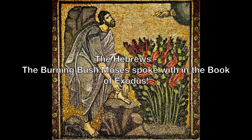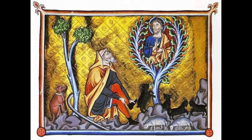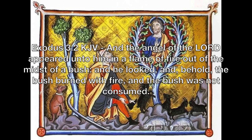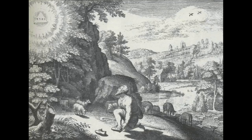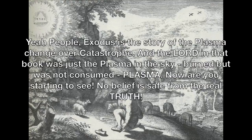The Hebrews: the burning bush Moses spoke with in the book of Exodus. Exodus 3:2, King James Version: 'And the angel of the Lord appeared unto him in a flame of fire out of the midst of a bush. And he looked, and behold, the bush burned with fire, and the bush was not consumed.' Plasma. Exodus is the story of the plasma changeover catastrophe, and the Lord in that book was just a plasma in the sky — burned, but was not consumed. Plasma. Now, are you starting to see? No belief is safe from the real truth.